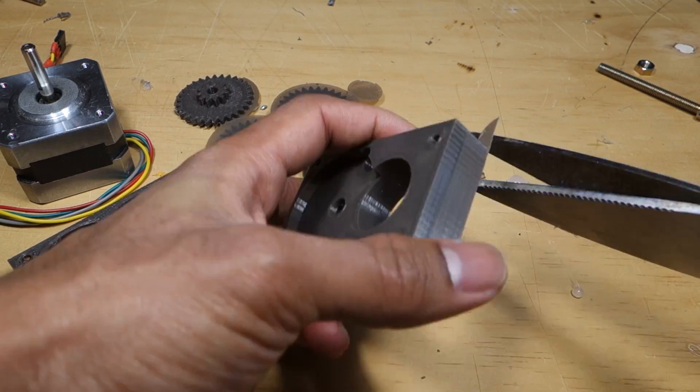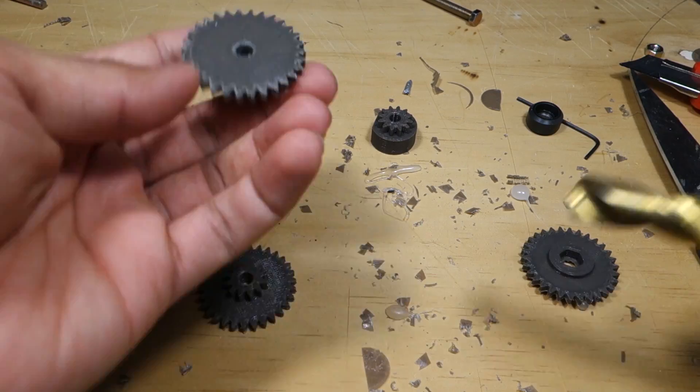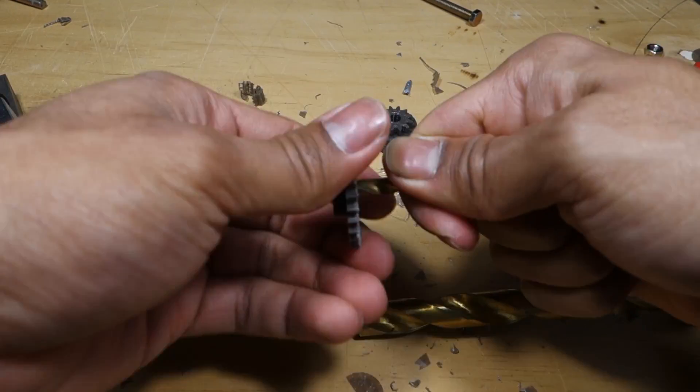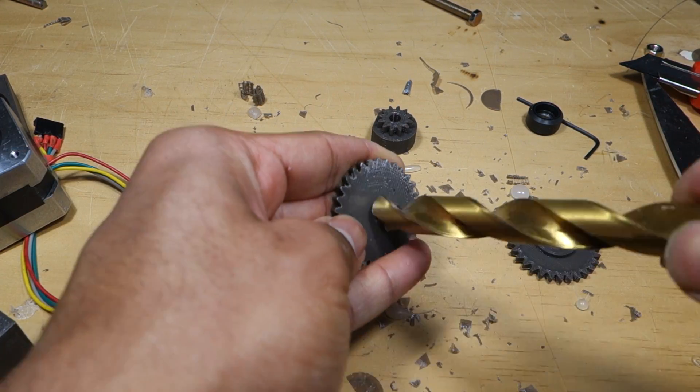Clean up your 3D printed parts first if you used supports or brims. You might need to drill out the holes of the gears too if your 3D printer is inaccurate. You can figure it out as you go.